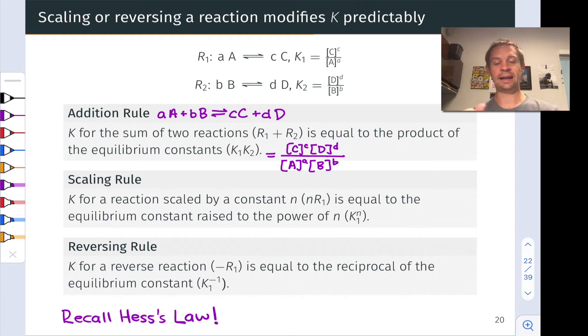The second is the scaling rule. Let's imagine we took reaction one and multiplied it by some general scaling factor n. So maybe we multiplied it by two or three or divided it by two. This also works for division of course. If we multiplied reaction one by n, the resulting reaction would be n times a molecules of A goes to n times c molecules of C.